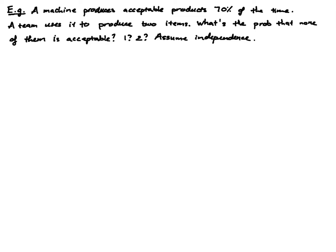Let's look at another example. Here we have a machine that produces acceptable products 70% of the time. A team uses the machine to produce two items. We want to find the probability that none of the items is acceptable, exactly one of the items is acceptable, and both items are acceptable. We assume independence.